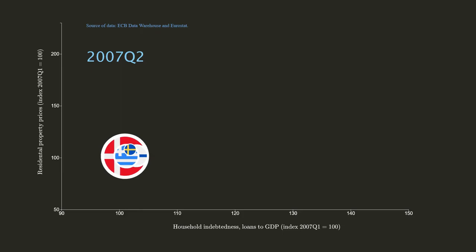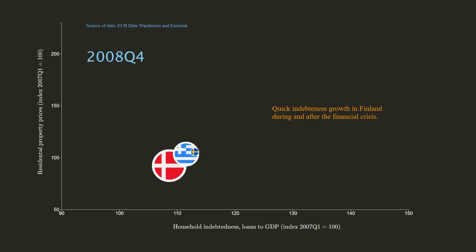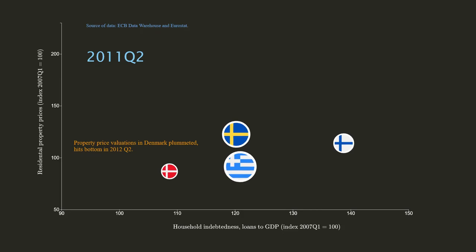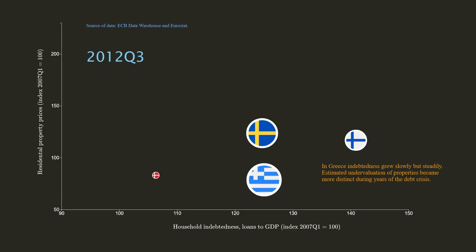In Finland, household indebtedness growth was quick during the financial crisis. During the years after the crisis, growth was exacerbated by diminishing gross domestic product. In contrast, indebtedness growth remained moderate in Denmark. Housing valuations came down and hit bottom in the second quarter of 2012.